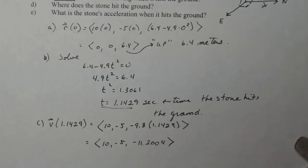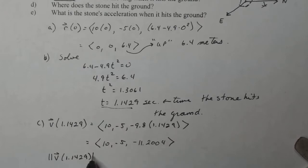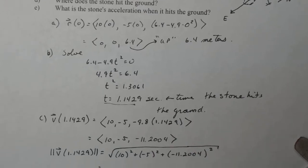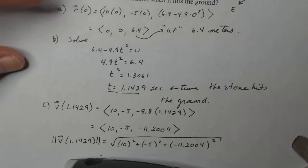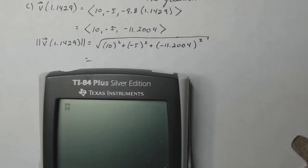Okay, now that's giving me my velocity vector at that point. It's not actually giving me my rate at that point. If I want my rate, what I need to do is find the magnitude of my velocity vector at that point. So that means I just take the square root of each of these guys squared. So 10 squared plus negative 5 squared plus negative 11.2004 squared. Square root of 10 squared plus 5 squared plus 11.2004 squared, and that's giving me 16.364.